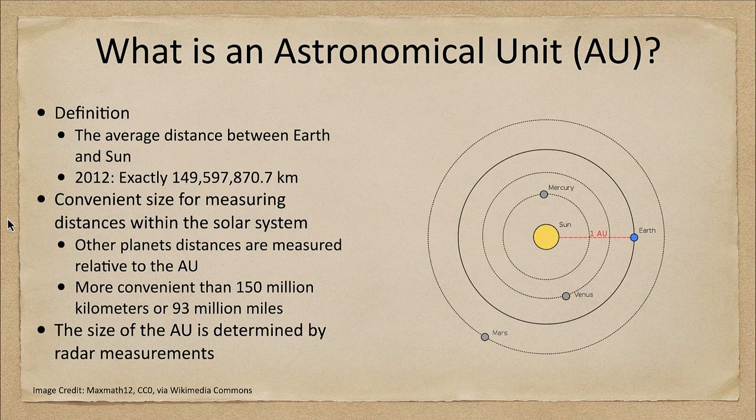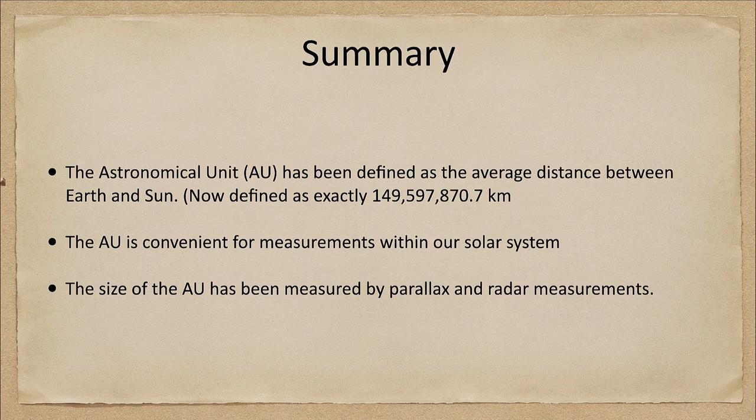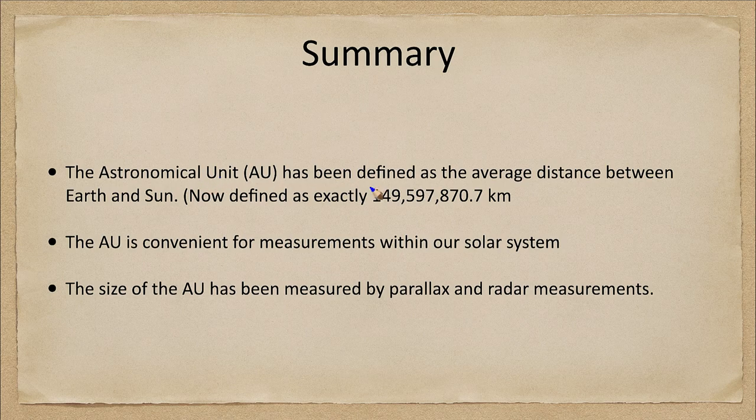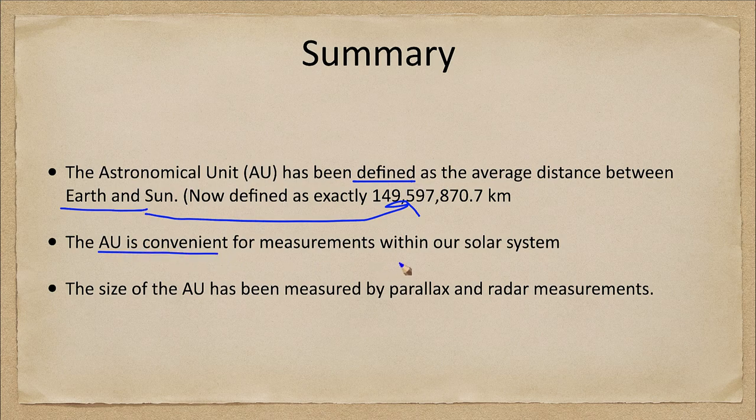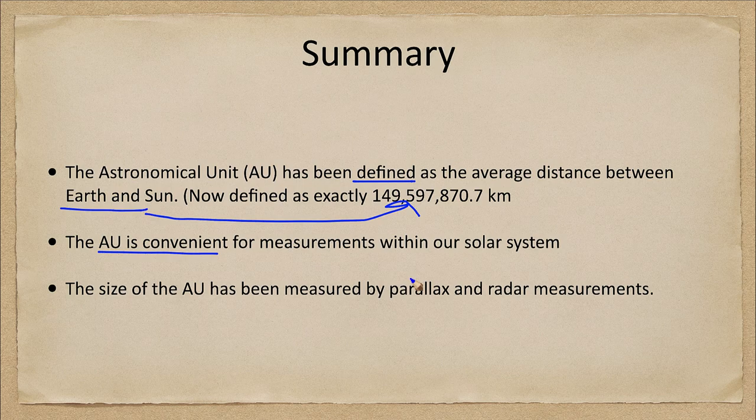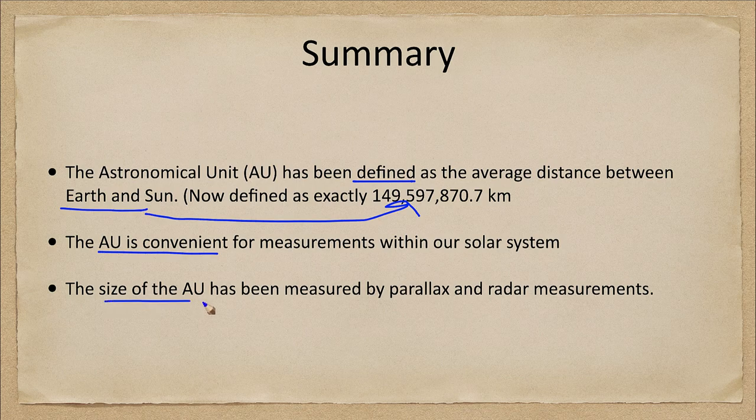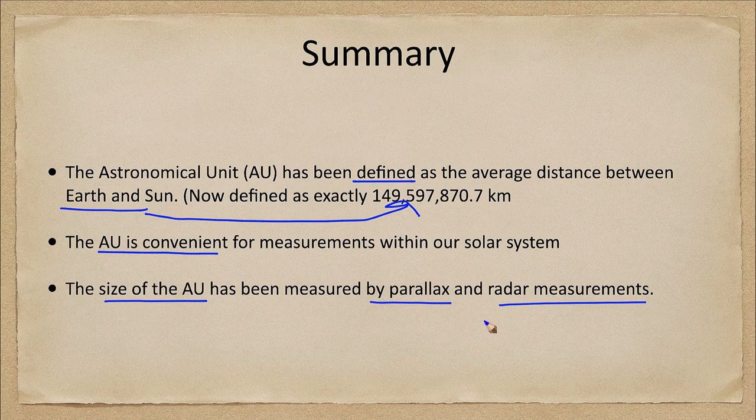So let's go ahead and finish up with the summary. So what we find with the astronomical unit is that it is defined as the average distance between Earth and Sun and for the last decade defined as a very specific number of kilometers. It is convenient for measurements within our solar system. Now it's not good for measuring to stars because then it starts to get to be large numbers again. But within our solar system this is very convenient and we have measured the size of the astronomical unit by both parallax and radar measurements.